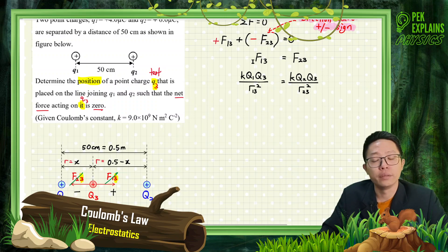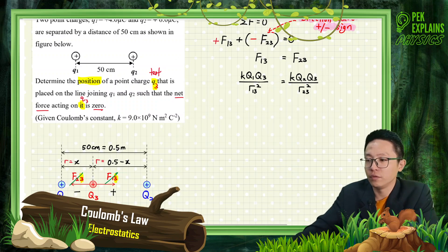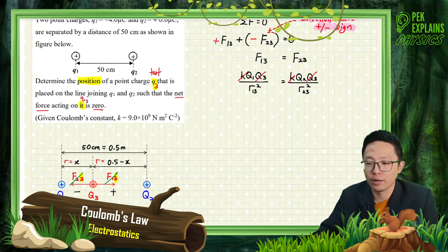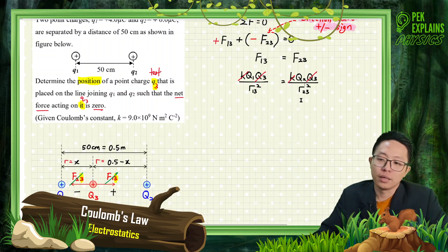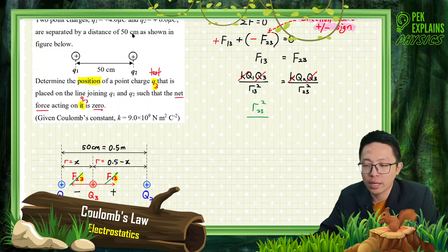Now put in the equations. F1,3 = K·Q1·Q3 / R13², and F2,3 = K·Q2·Q3 / R23². I can cancel the common terms: K cancels, and Q3 also cancels out of the equation. So we're just left with Q1 and Q2. I rearrange so that R23² is on one side over R13², equal to Q2 over Q1, to prepare for taking a square root.